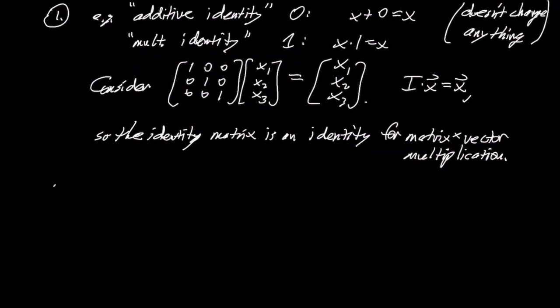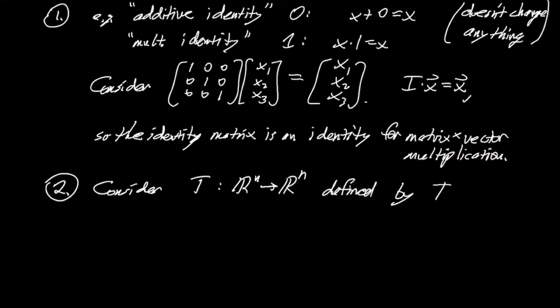But I also want to give a different reason that I think is very cool. There's also a transformation perspective reason why we would call this the identity. If you think about it, there's a very sort of dumb transformation, right? So consider the transformation from R^n to R^n defined by T(x) = x.